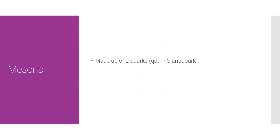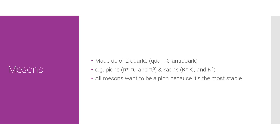The two mesons we need to know about are pions and kaons, but this can include pi-plus, pi-minus, pi-neutral, k-plus, k-minus, and k-neutral. If you're asked what the anti-particle of a pi-plus particle is, then it's just a pi-minus. The anti-particle of a k-minus is just a k-plus. The anti-particle of a pi-neutral is just a pi-neutral.